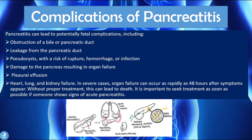It is therefore important to seek treatment as soon as possible if someone shows signs of acute pancreatitis. In chronic pancreatitis, pancreatic ascites — fluid pooling around the pancreas — may form a fistula into the lungs, causing pleural effusion, and can also lead to acute renal failure.